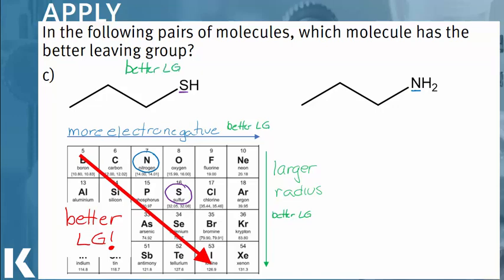So now you should feel more comfortable using atomic radius and charge to evaluate leaving group stability.